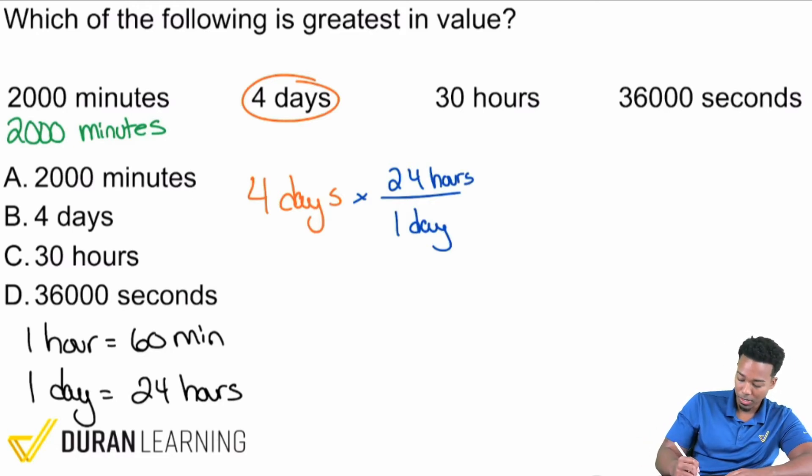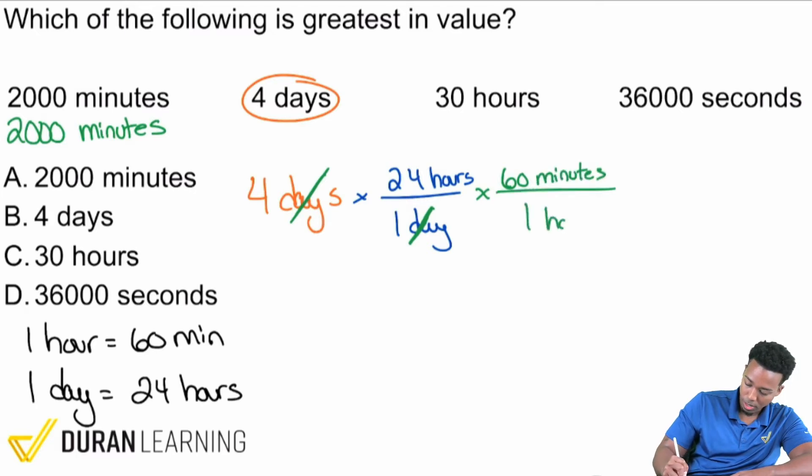So four days, to turn that into hours, we will first go ahead and do the conversion rate: one day, 24 hours. Then after that we want to turn that - because days are going to cancel out, leaving us with hours. But we want minutes here so we can compare, so we'll continue by multiplying by the conversion rate: 60 minutes is one hour. What that allows us to do is cancel out the hours.